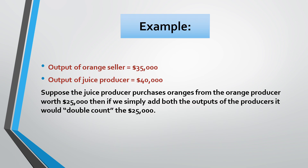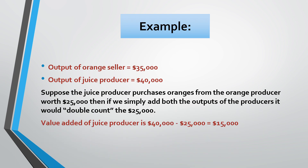If oranges and juice are treated as final products, then the value of oranges is counted twice — at both stages, i.e., at orange production and juice production. This is called double counting in national income accounting, and it results in overestimation of national income. So double counting means counting the value of a commodity more than once.